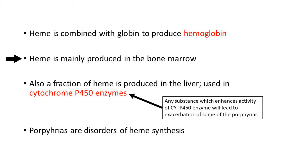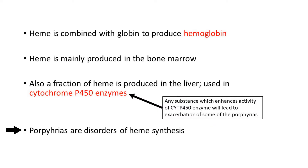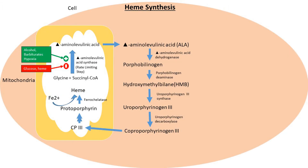Heme is mainly produced in the bone marrow, and a small fraction is also produced in the liver, which is used by the cytochrome P450 enzyme. Any substance or drug which enhances the activity of cytochrome P450 will also lead to worsening of some disorders of heme synthesis. These disorders can also be referred to as porphyrias.